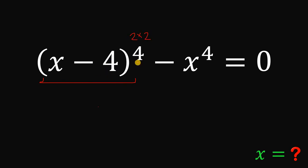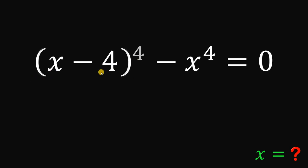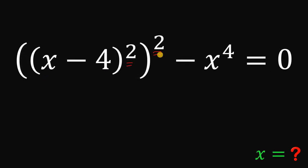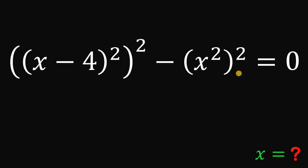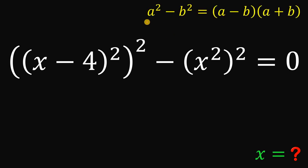So x minus 4 raised to the power of 4 can be written as x minus 4 raised to the power of 2, raised to the power of 2. We can do the same thing to x raised to the power of 4, since 4 is 2 times 2, so we can rewrite this as x squared raised to the power of 2. We will apply the identity: a squared minus b squared equals a minus b multiplied by a plus b.